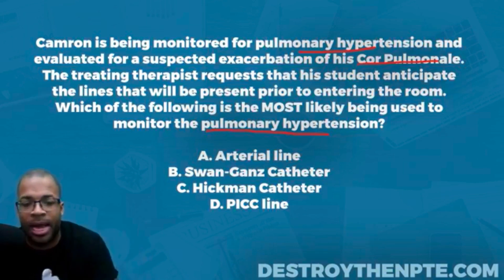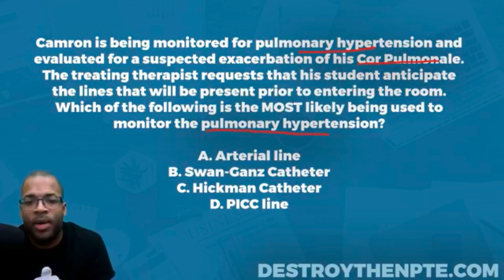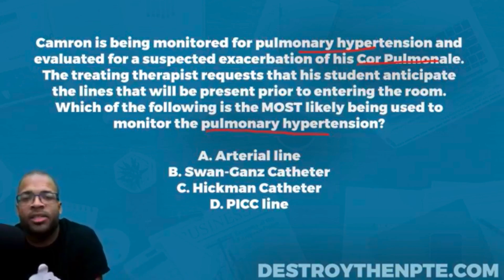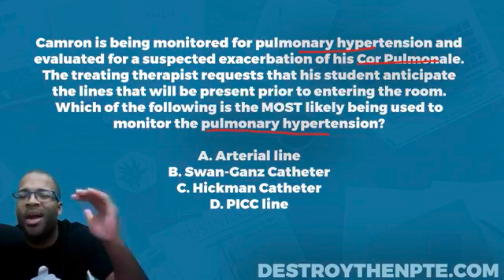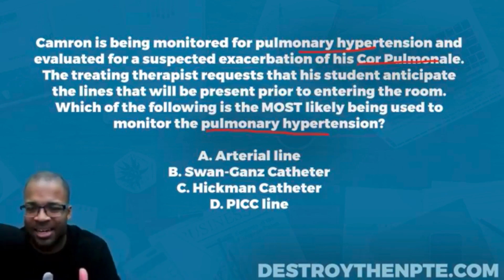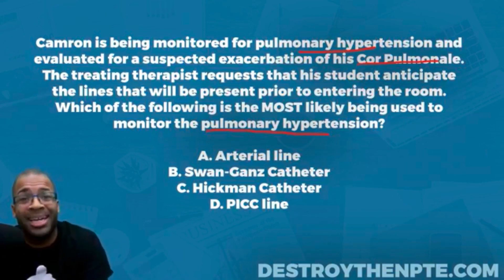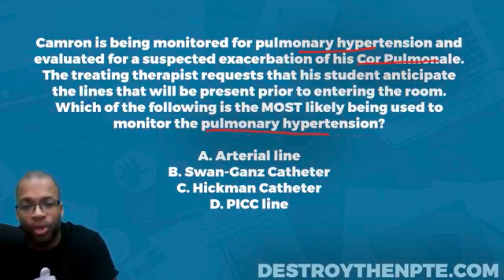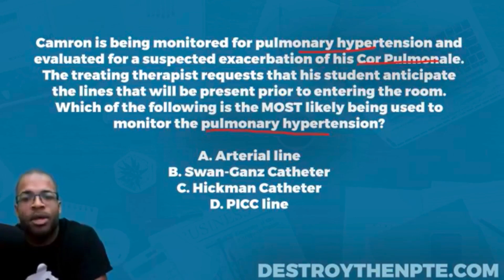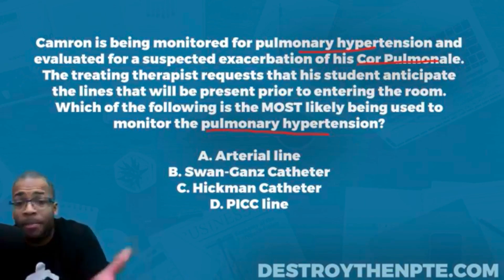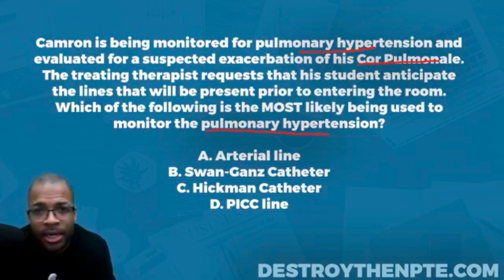The answer choices are: A, arterial line; B, Swan-Ganz catheter; C, Hickman catheter; and D, PICC line. We need to dissect each one. The arterial line is primarily used for two major things: arterial blood gas analysis — picking up CO2, O2, and so forth — and measuring blood pressure in real time. Looking at the question, there's nothing here about any concern regarding blood gases.